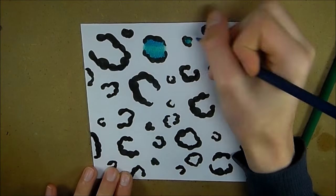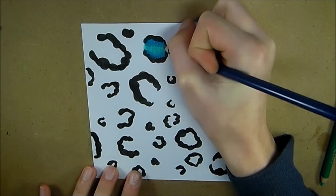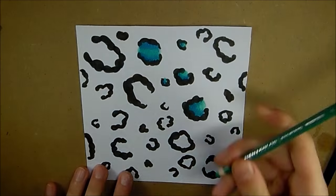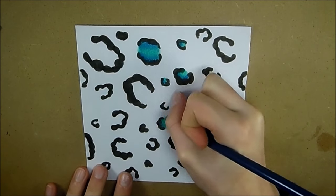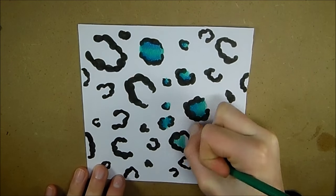I'm using some Prismacolor colored pencils in a green and a blue to add the color in between the black lines. What I'm doing is I'm just putting a base color of the green and then I'm going over it with some shadows with blue. Now you don't have to use these two colors.